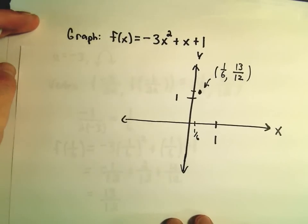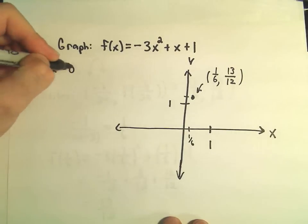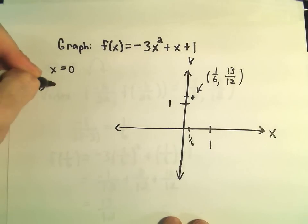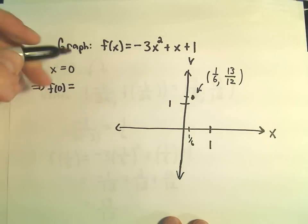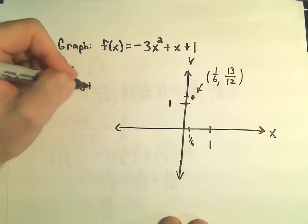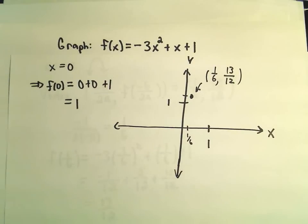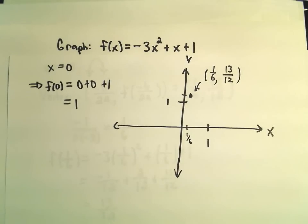To find the y-intercept, remember to find the y-intercept, all we do is we just take our formula and we plug in x equals 0. So if we do that, we'll get f of 0. We'll just get negative 3 times 0, which is 0, plus 0, plus 1. So it says we get the value of positive 1 out.